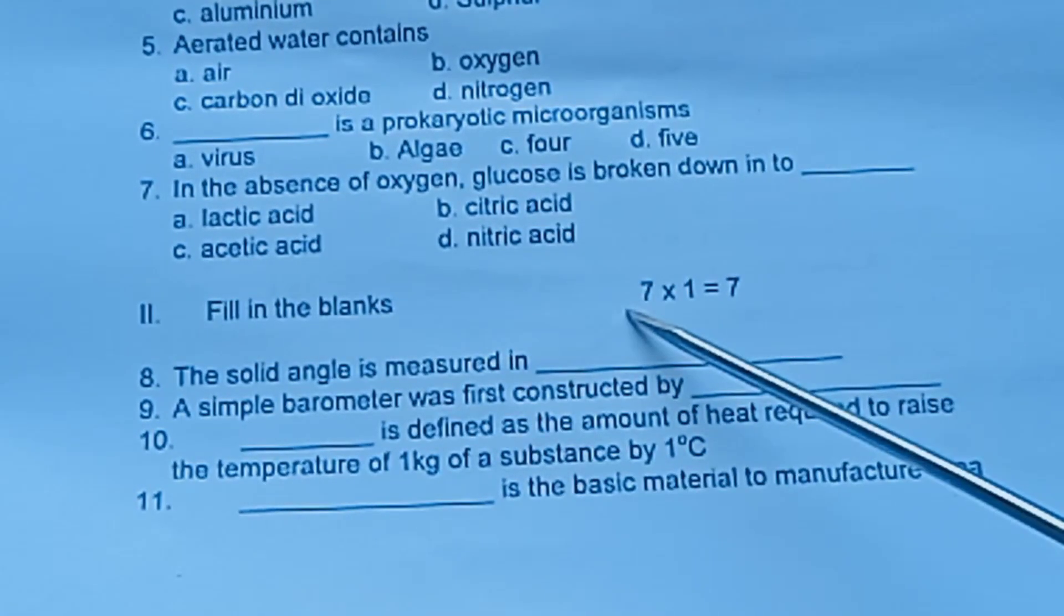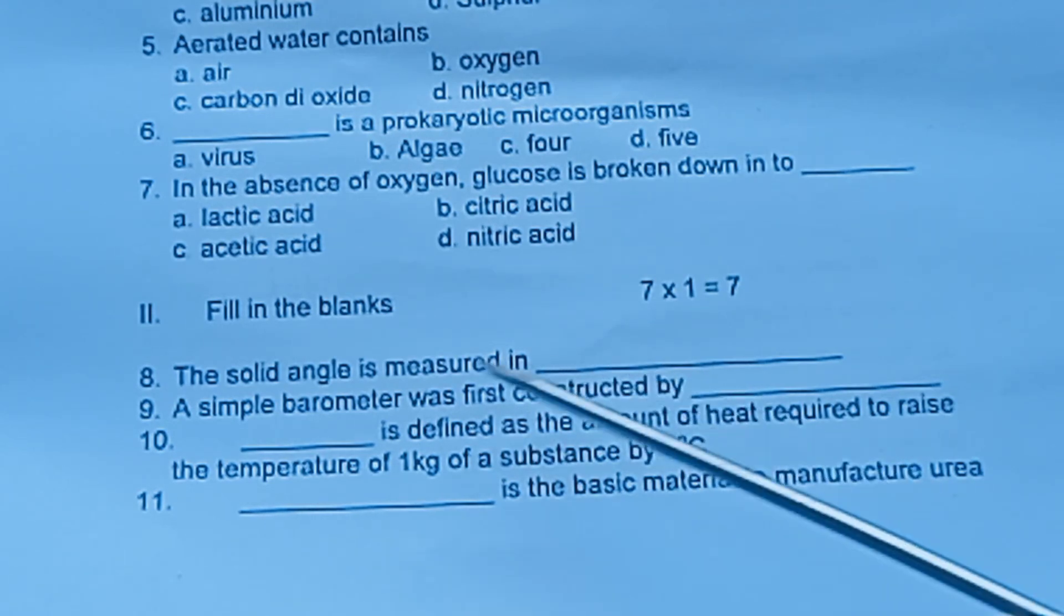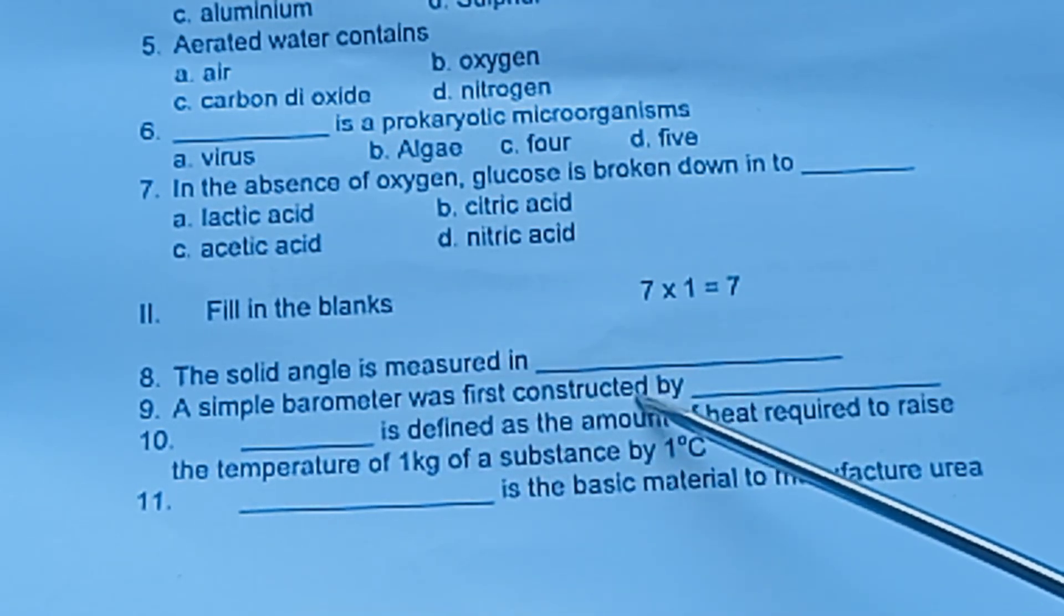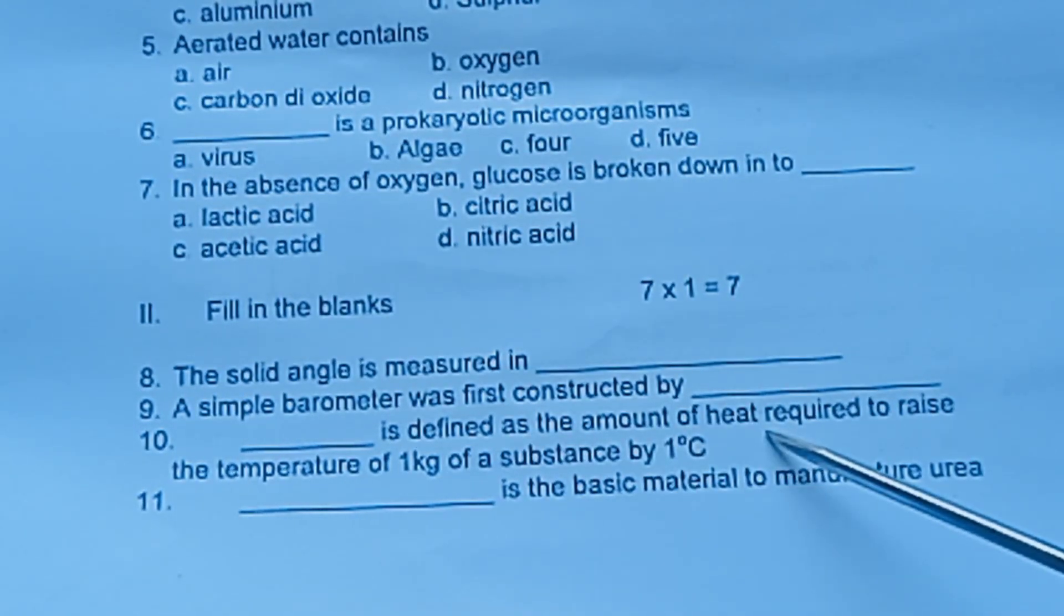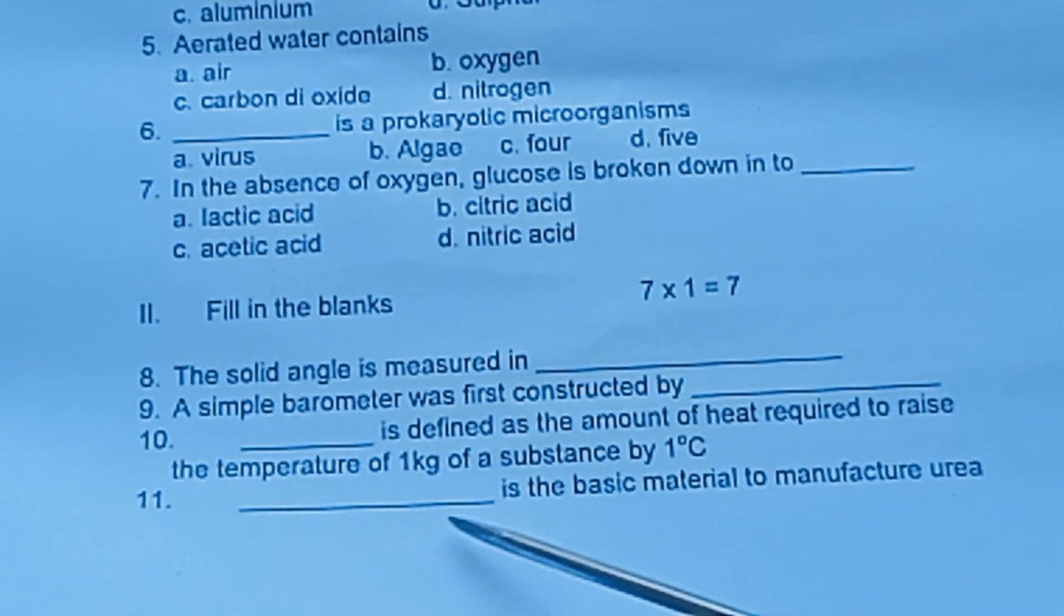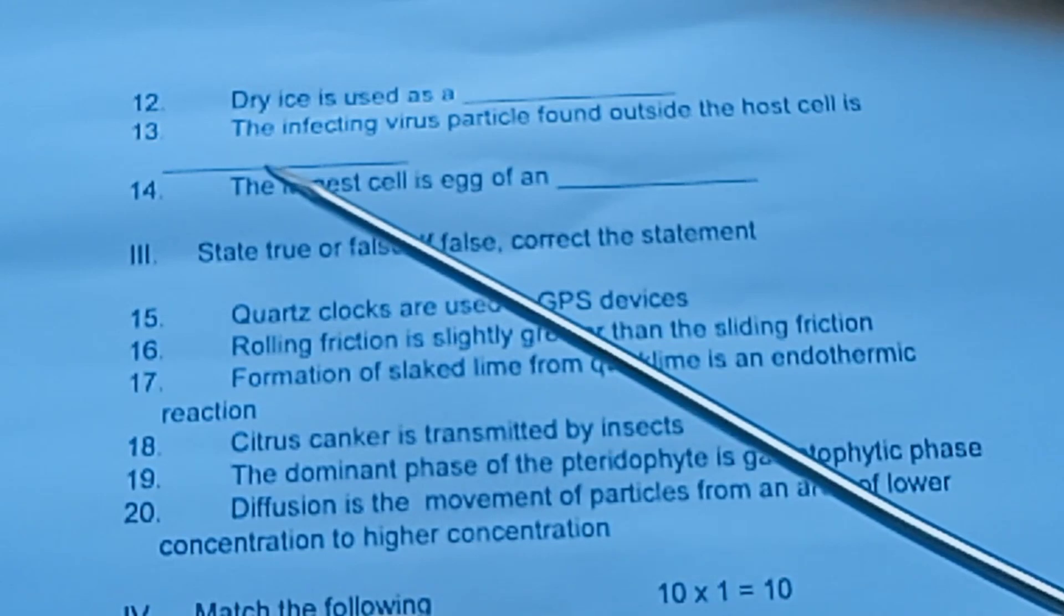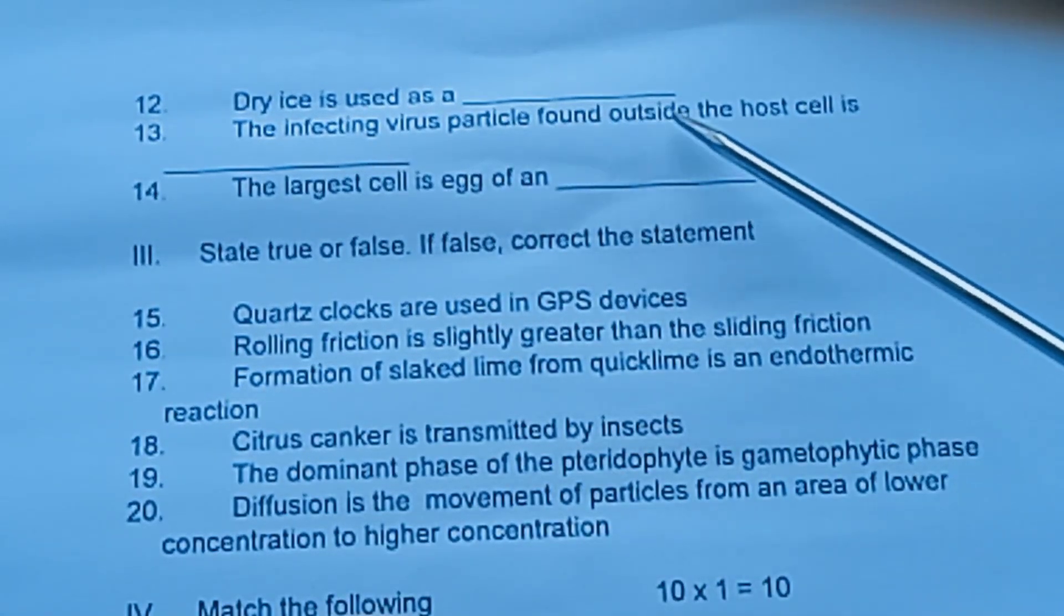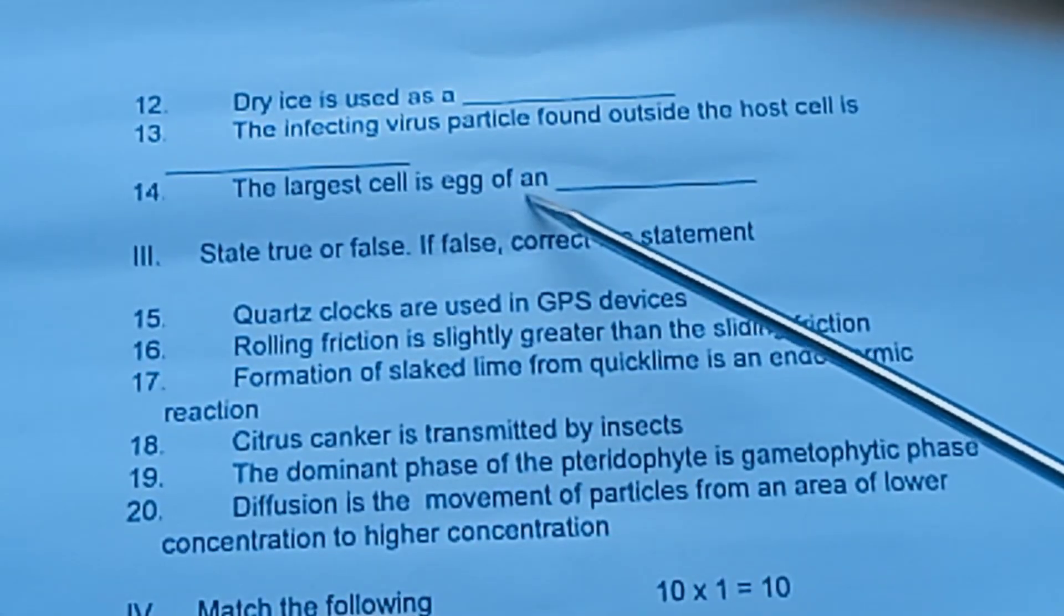Formula 2: Fill in the blanks. 7 into 1 is equal to 7. Question 8: The solid angle is measured in dash. Question 9: A simple barometer was first constructed by dash. Question 10: Dash is defined as the amount of heat required to raise the temperature of 1 kg of a substance by 1 degree Celsius.